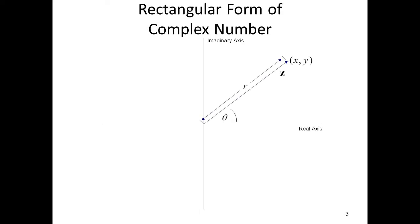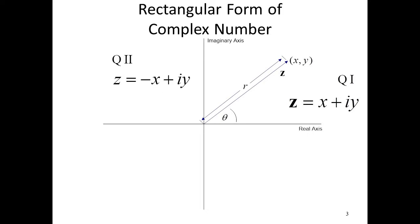A complex number where x and y are not equal to 0: z equals x plus iy is in quadrant 1; z equals negative x plus iy is in quadrant 2; z equals negative x minus iy is in quadrant 3; z equals x minus iy is in quadrant 4.